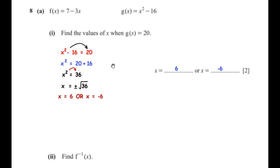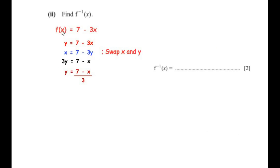Now let us find f inverse of x. We consider f(x) equals 7 minus 3x and replace f(x) with y, giving y equals 7 minus 3x. In the next step we swap the places of x and y, so x takes the place of y and y takes the place of x. Our new equation becomes x equals 7 minus 3y.